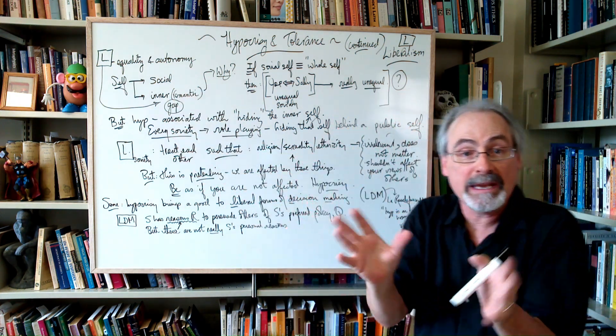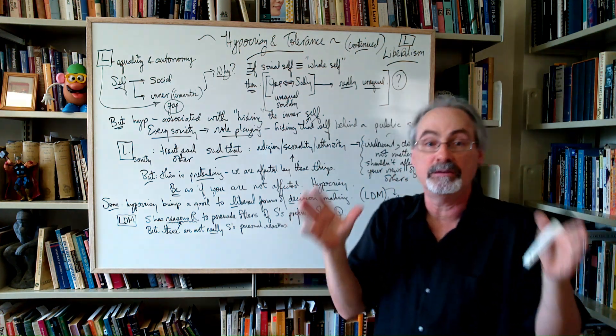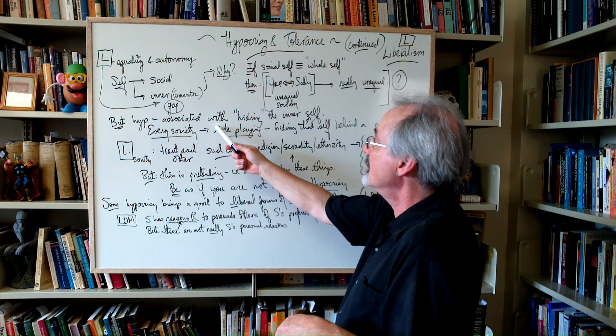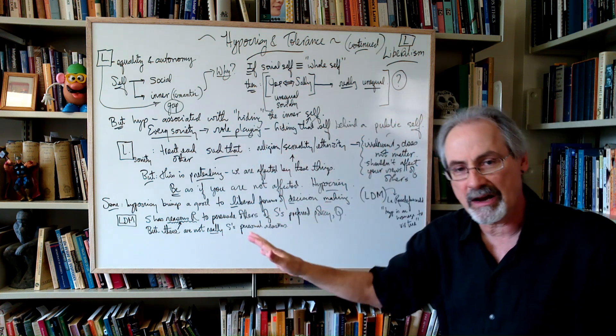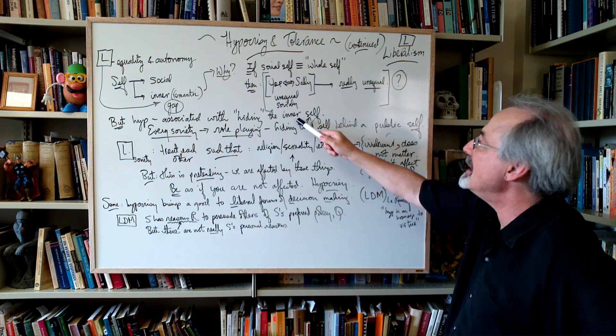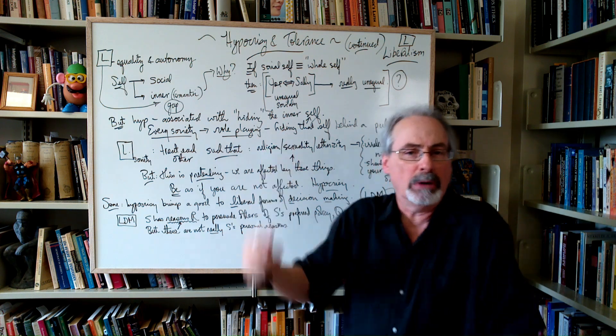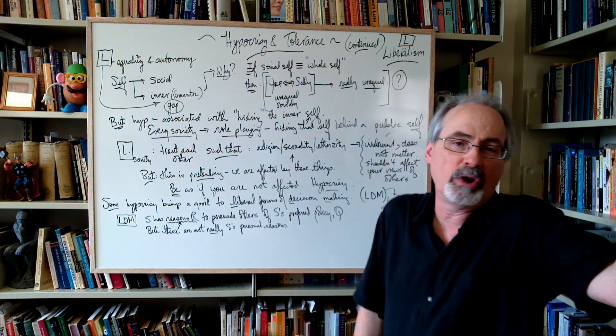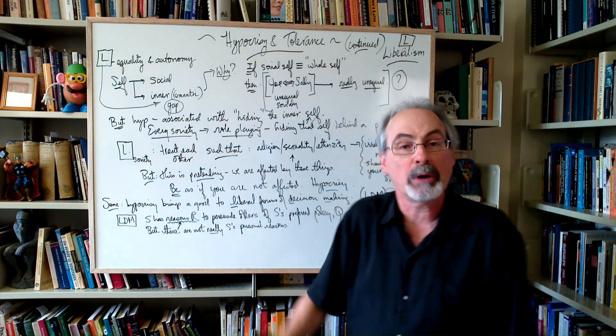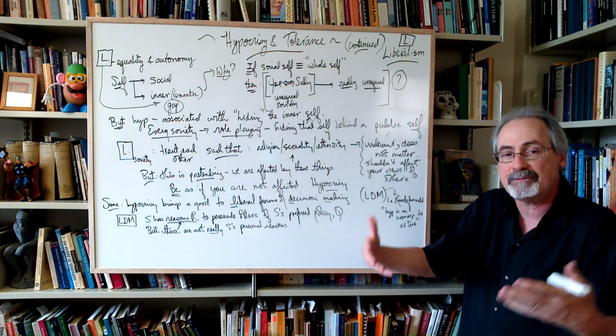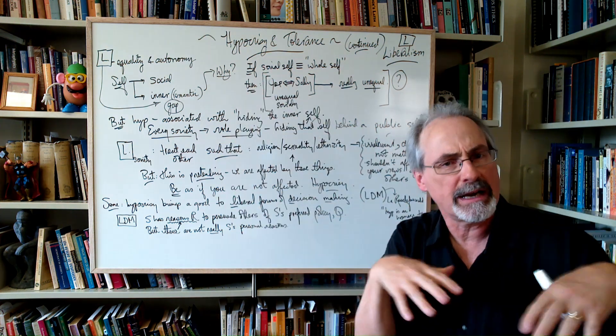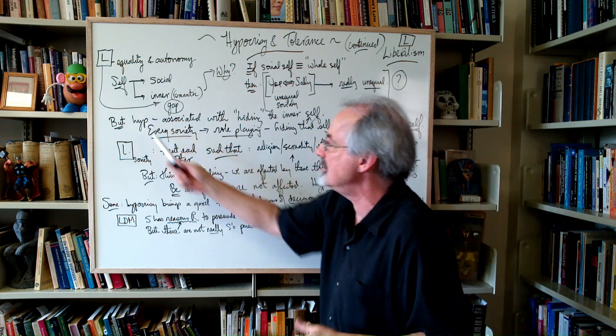And hypocrisy is often associated with hiding that inner self. Now, every society, we can roughly say, has some kind of role playing in it. You're hiding that inner self behind a public self. You know, right now, I'm hiding my inner self behind my public professor self, stuff like that. And you go out to work, and you do things, and you talk to people and all that, you know, and you buy a ticket to a concert or whatever. You know, there's role playing.